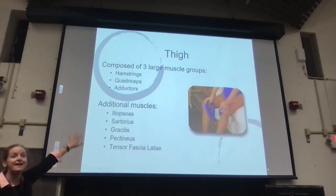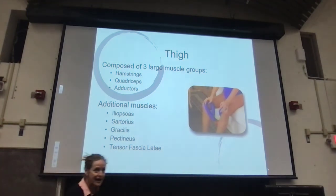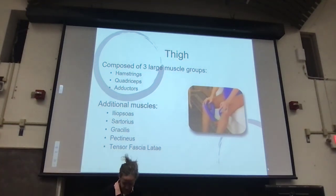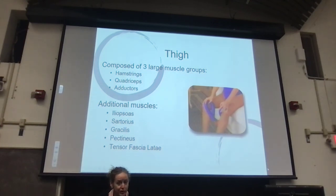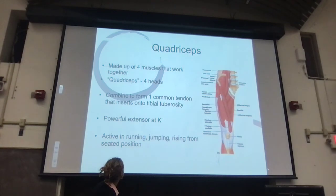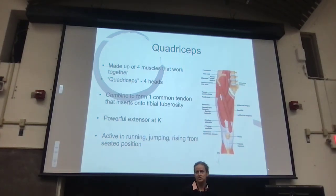We spent a lot of time in lab on the thigh. We have the anterior thigh — quads — the posterior thigh — hamstrings — and the medial thigh, which would be the adductors and groin. Let's start with the quadriceps. You already know what comprises the quadriceps.